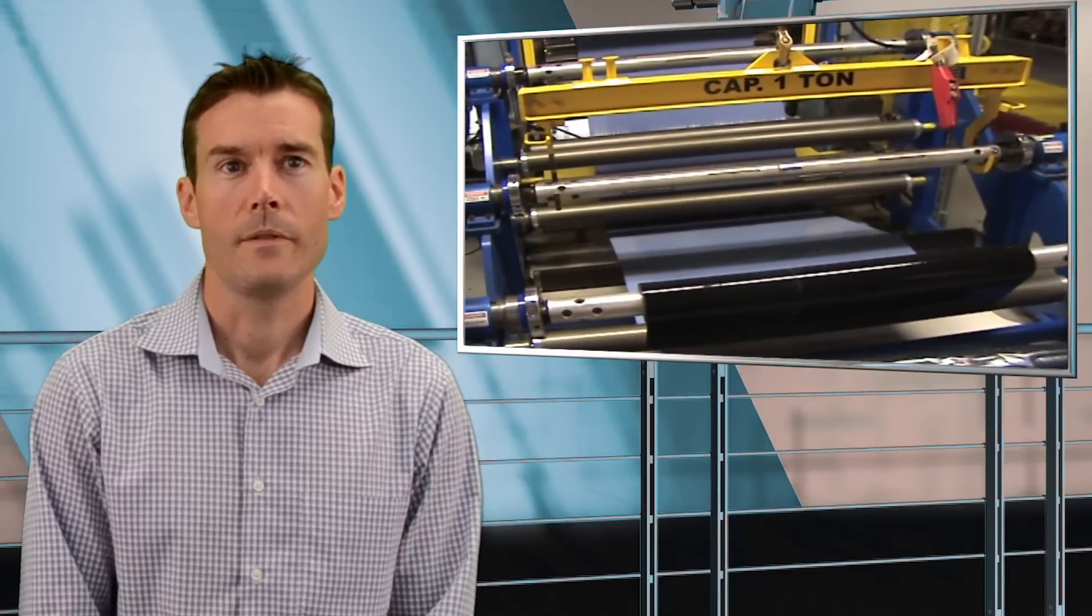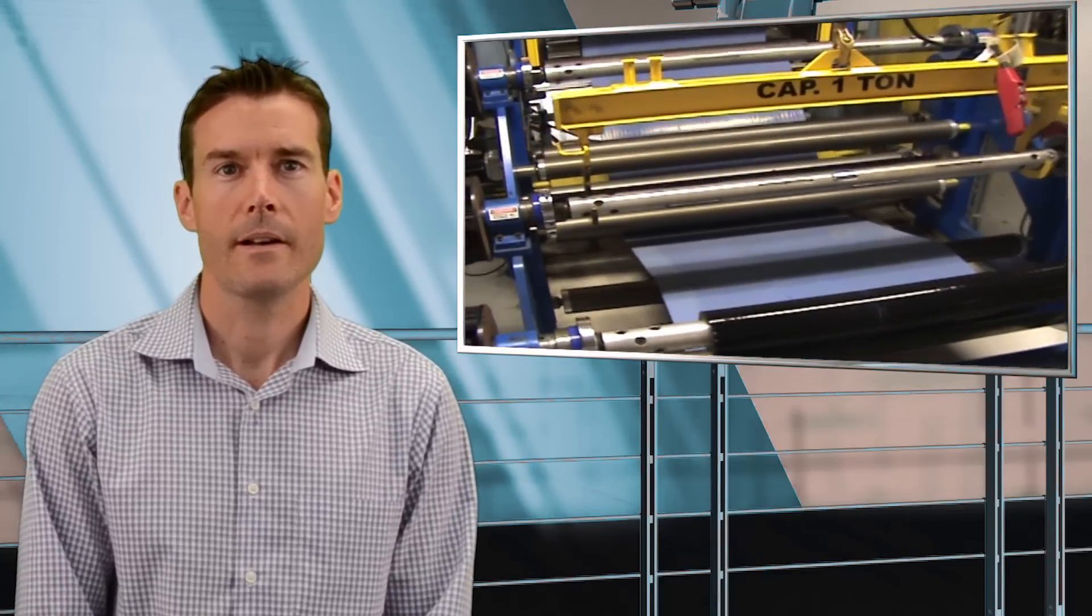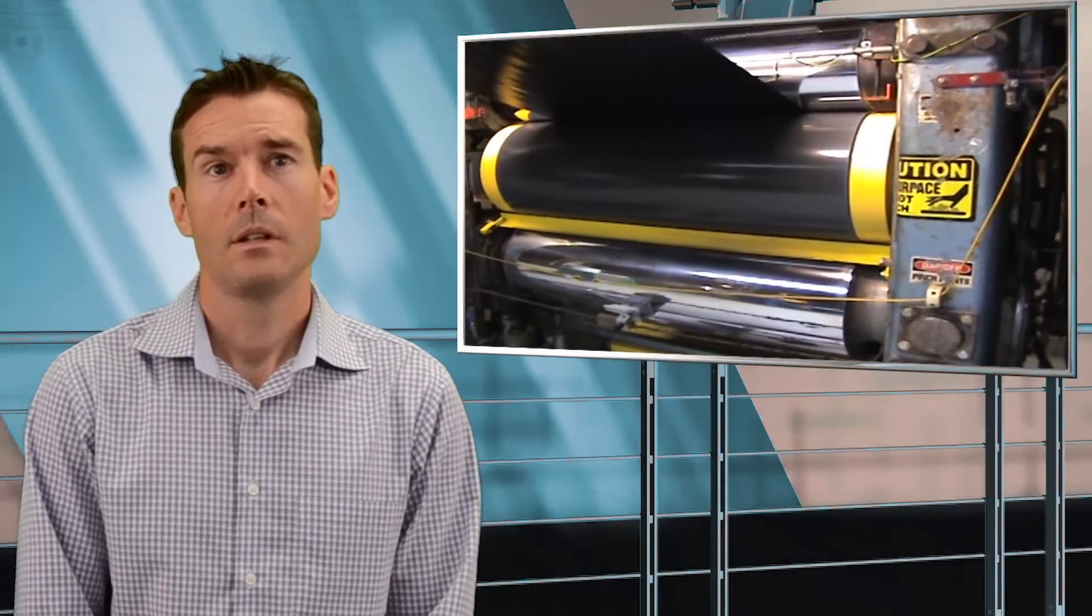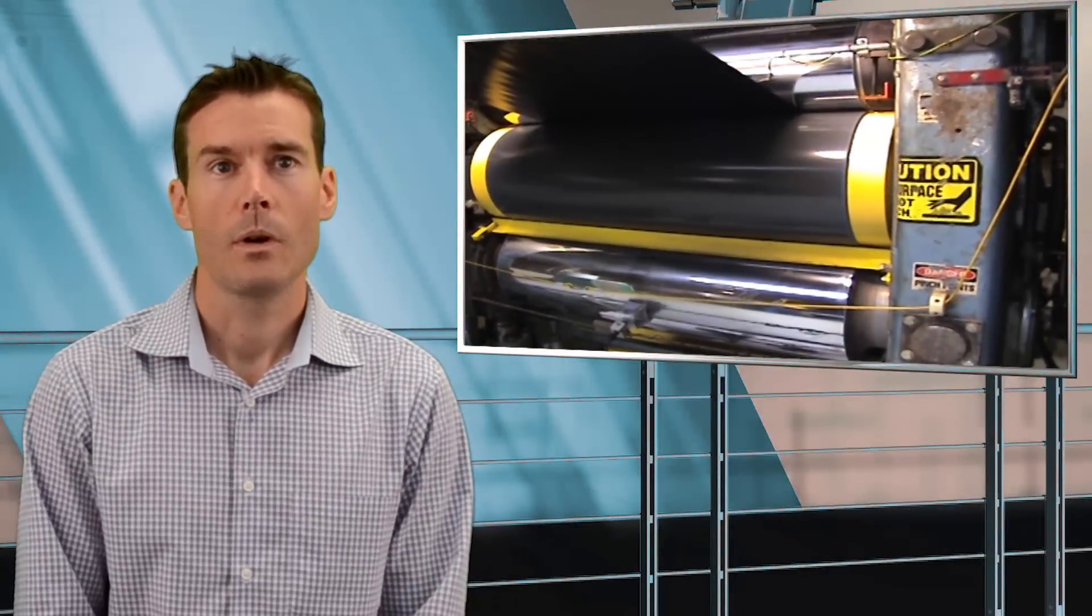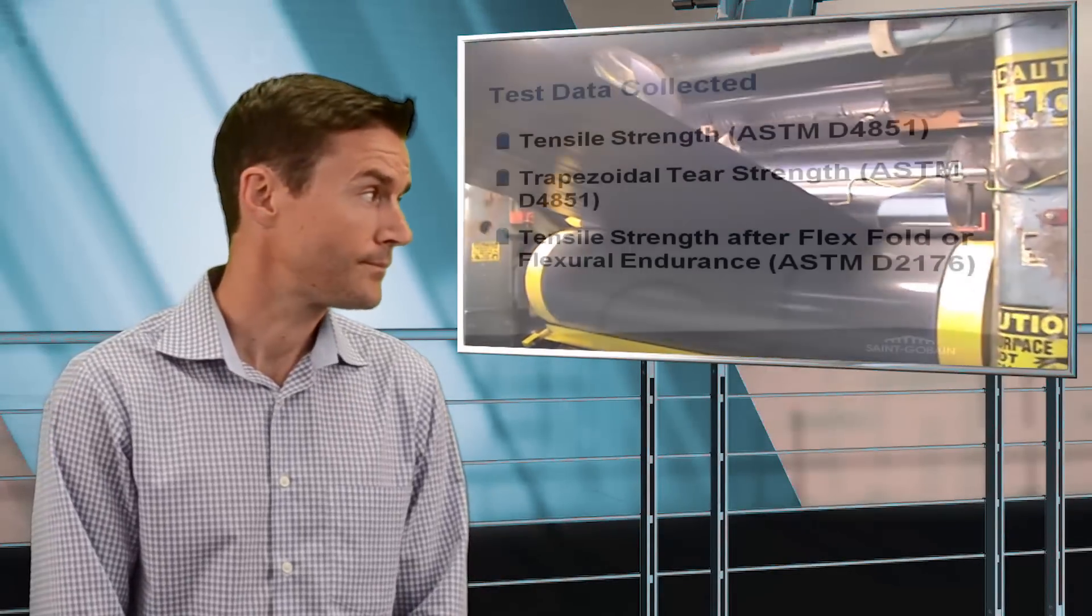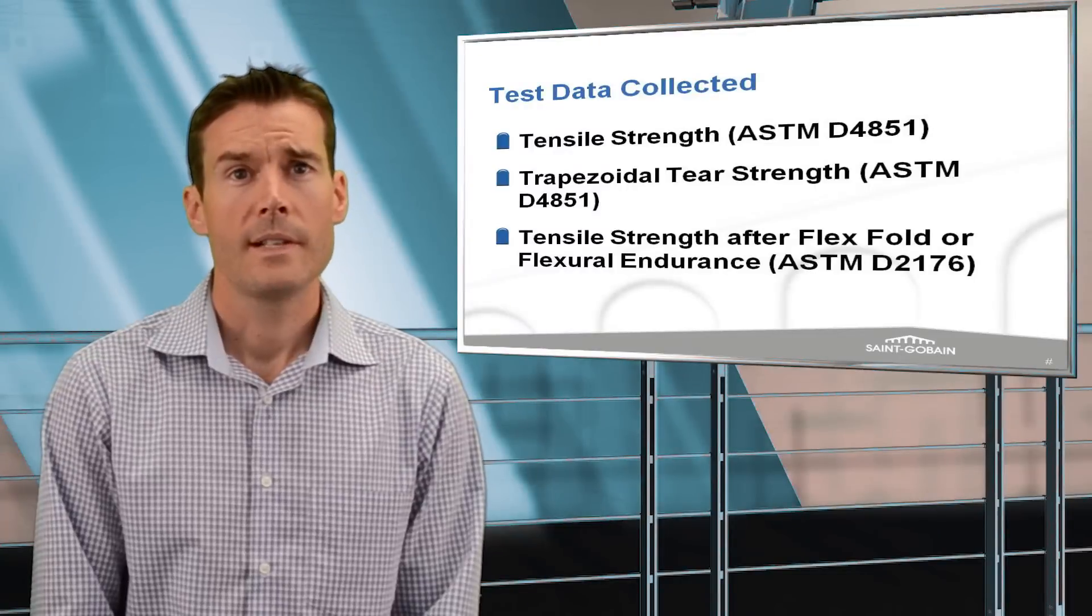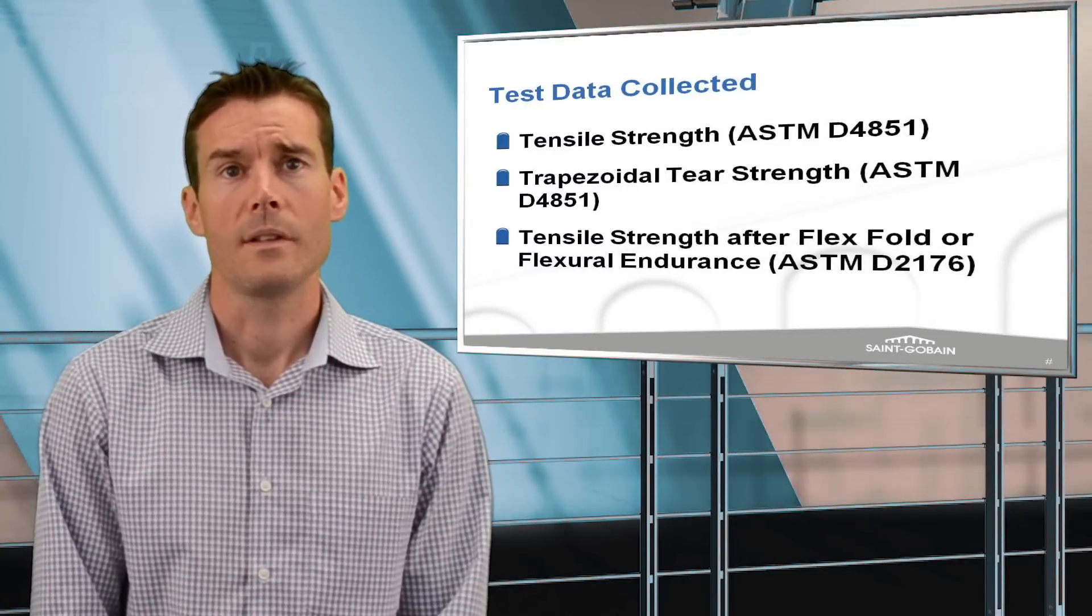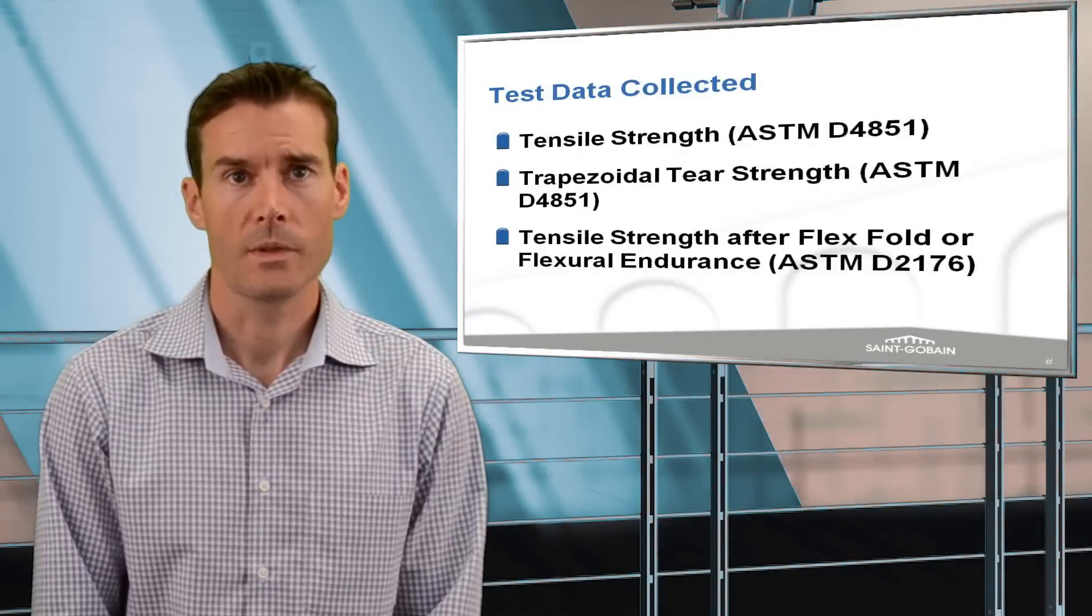The first step was to visually examine the material for any evidence of physical damage or degradation. There was none. The material was then submitted to our physical properties testing lab where we tested for tensile strength, tear strength, as well as tensile strength after flex-fold testing.